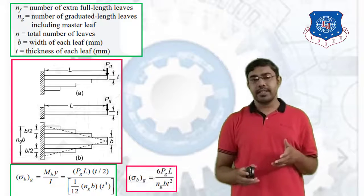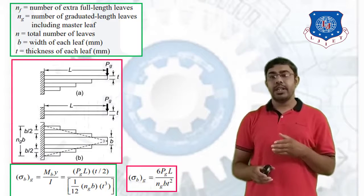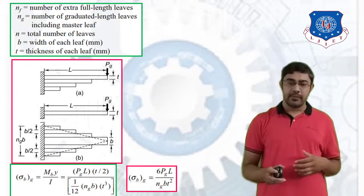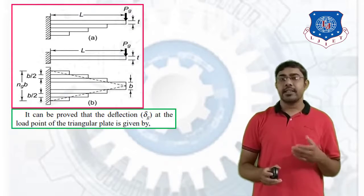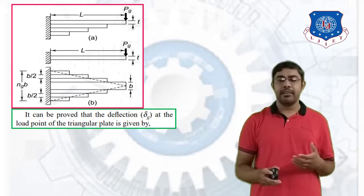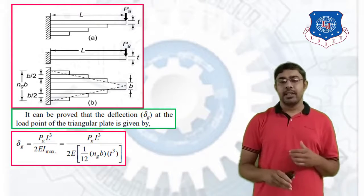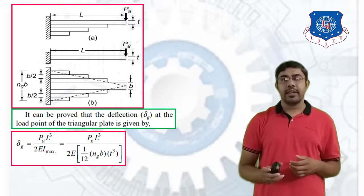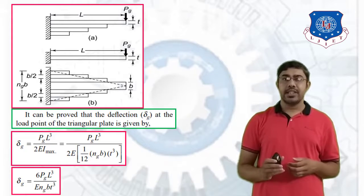The deflection delta_G at the load point of the triangular graduated leaf assembly is given by delta_G = PG·L³ / (2E·I_max), where I_max = (1/12)·NG·b·t³. Simplifying this expression gives: delta_G = 6·PG·L³ / (E·NG·b·t³).